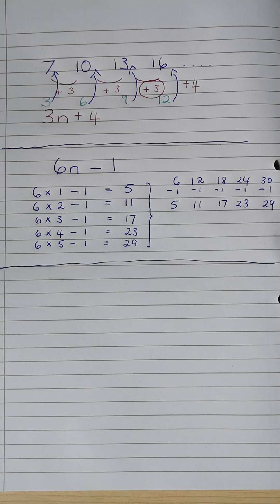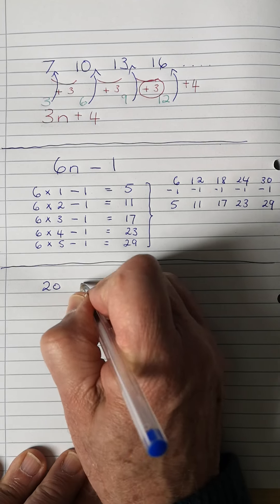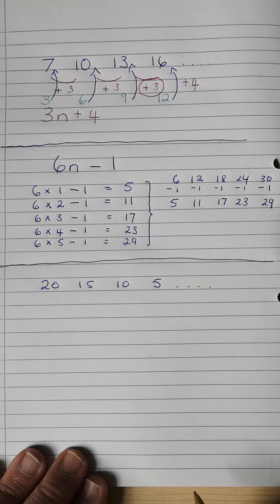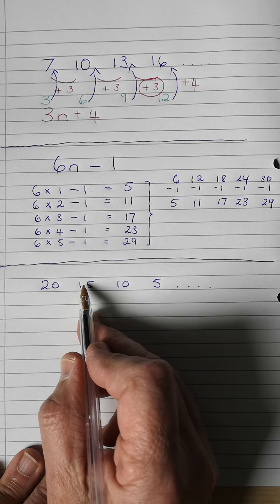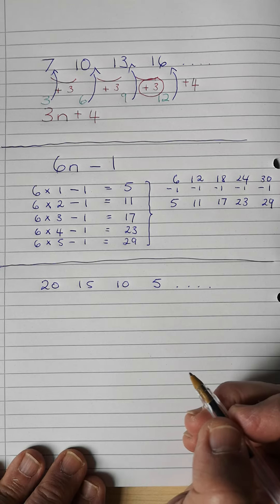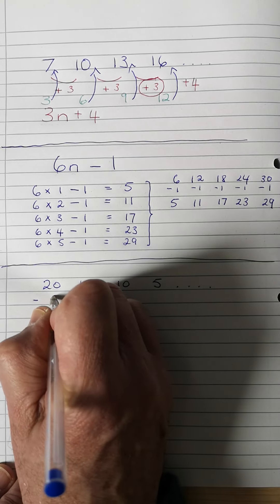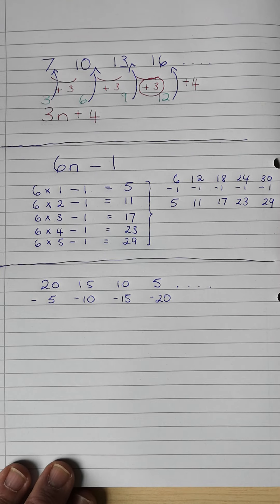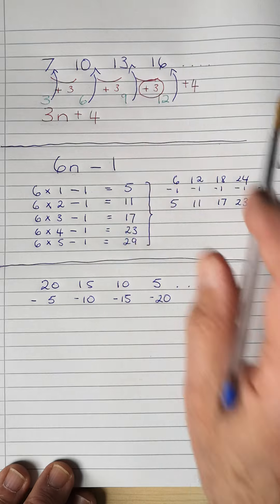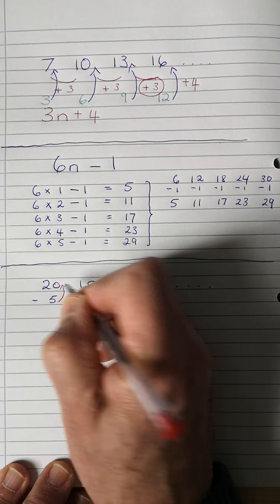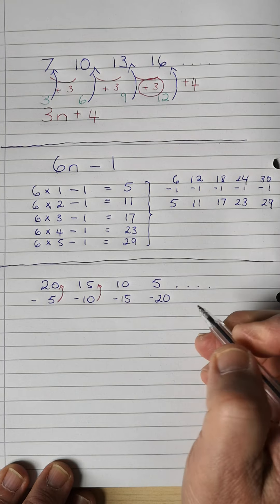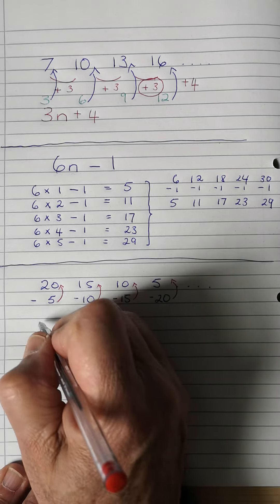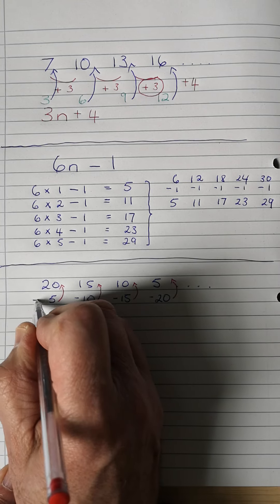Don't be caught out by this one — now the numbers are actually going down. We need to work out the nth term for 20, 15, 10, 5. It goes down by 5 each time, so it's minus 5. Writing out the negative five times table: minus 5, minus 10, minus 15, minus 20. It's going to be minus 5n because it's the five times table and it's negative.